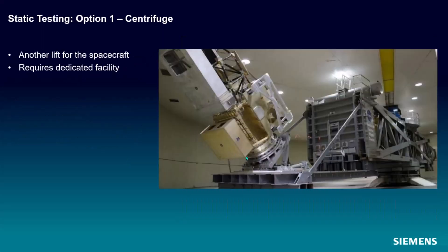Option one, centrifuge. And this is a picture of a big centrifuge with a spacecraft on it, and this thing spins around and around and around. And you can imagine that people get very anxious when you have a million-dollar spacecraft on something like this spinning around and around.